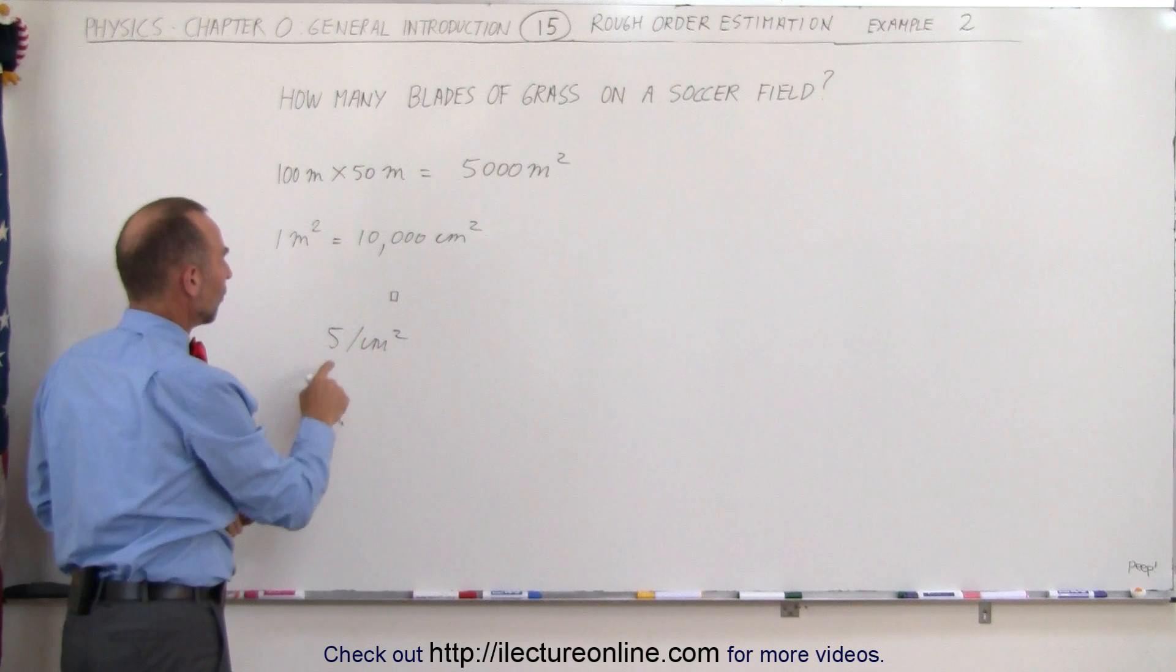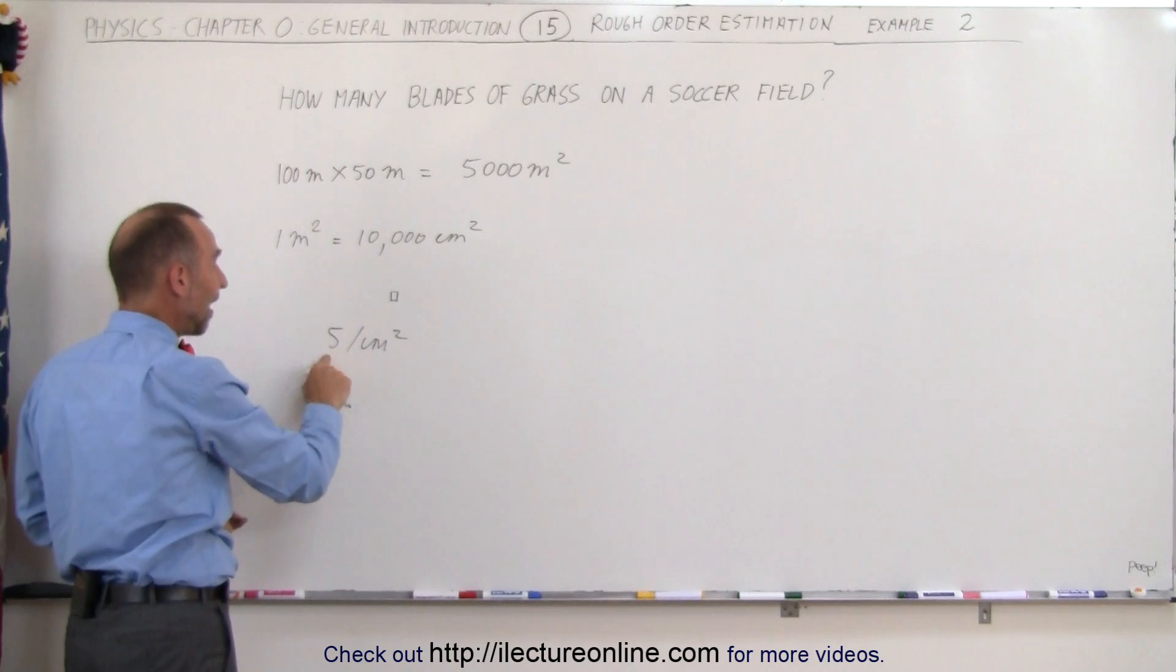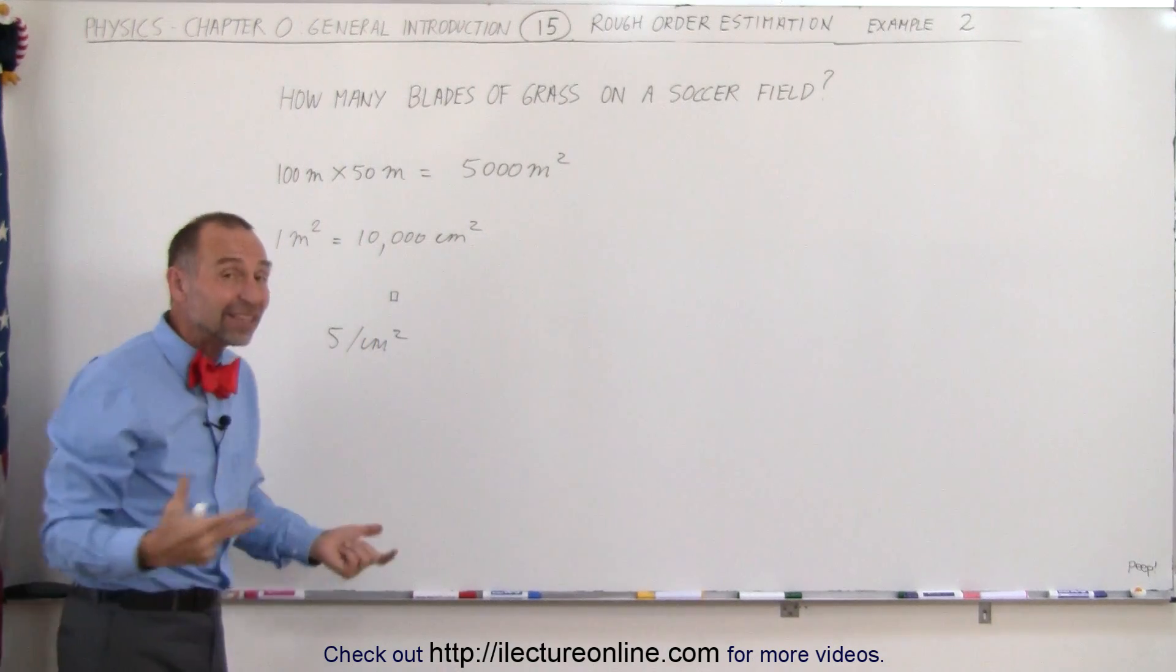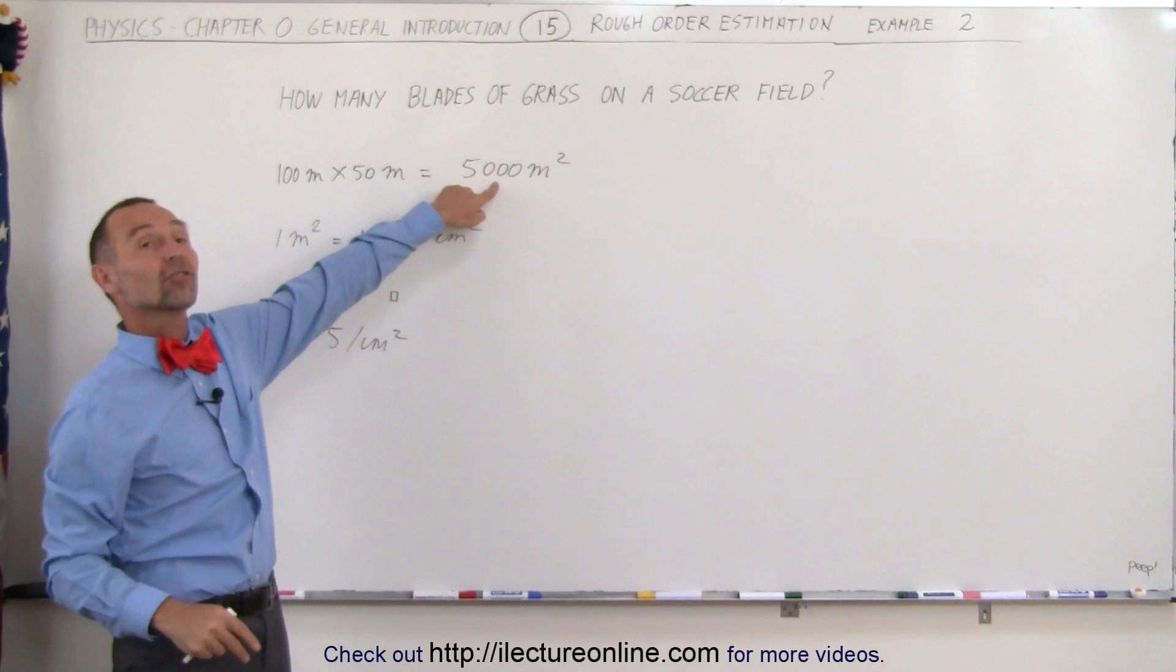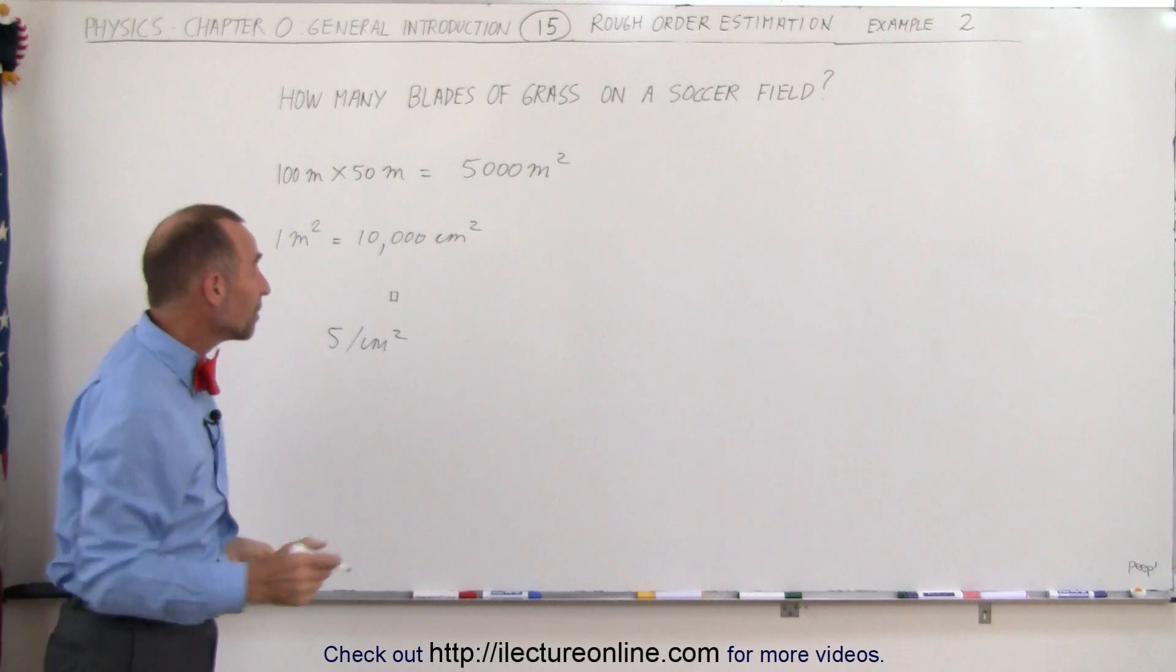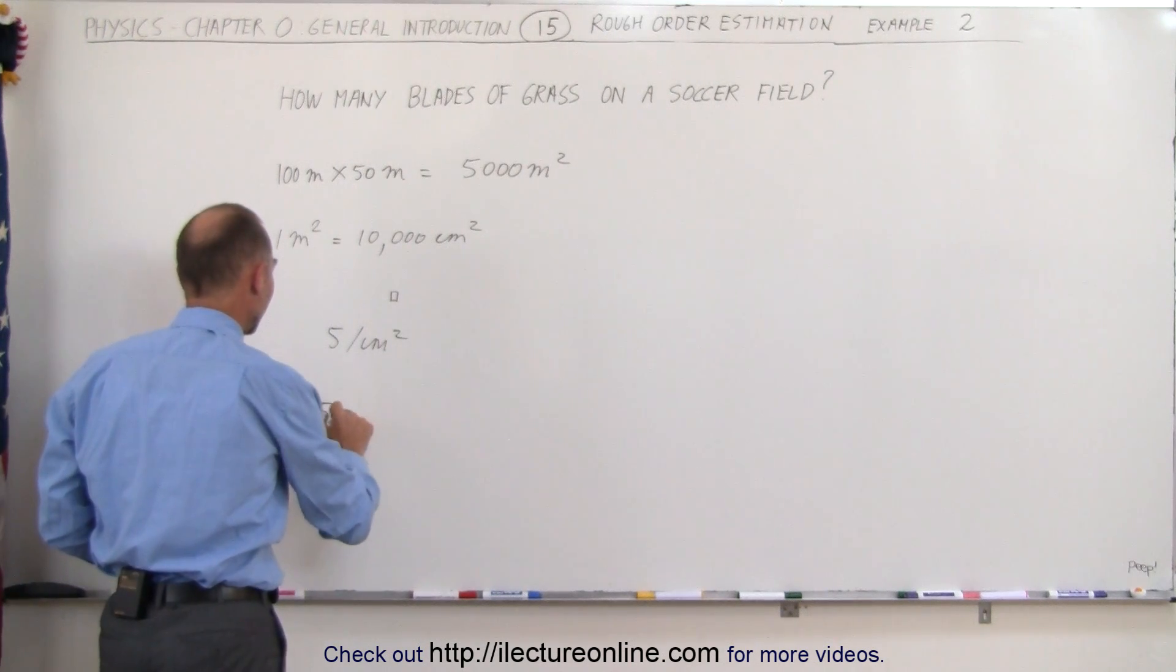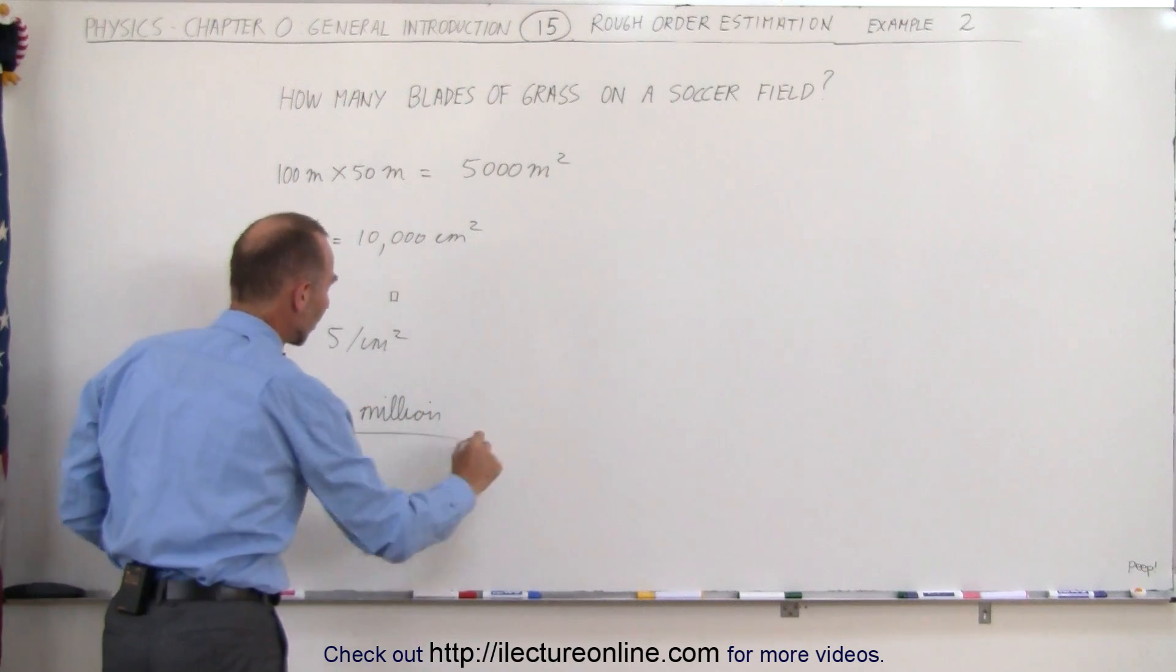Okay, so five per centimeter squared, there's 10,000 square centimeters in one square meter, so five times 10,000 would be 50,000 blades of grass per square meter. And there's 5,000 square meters, so 50,000 times 5,000, that would be 250,000,000. So 250 million blades of grass in a soccer field.